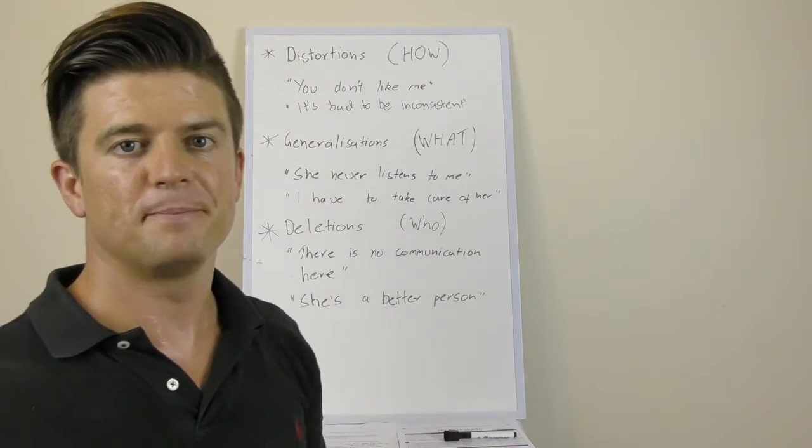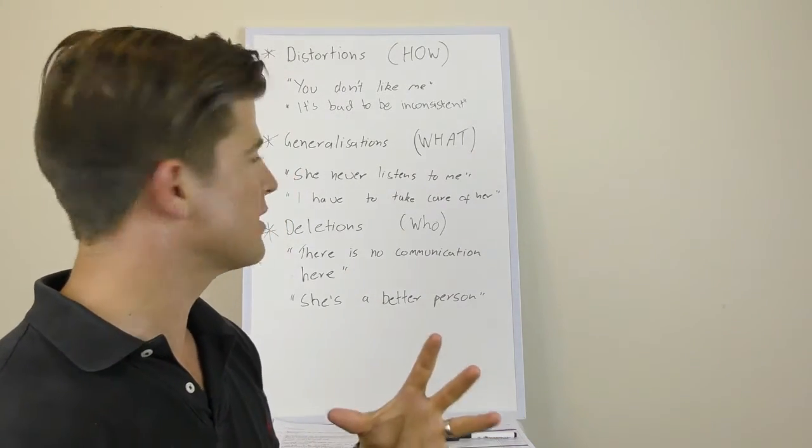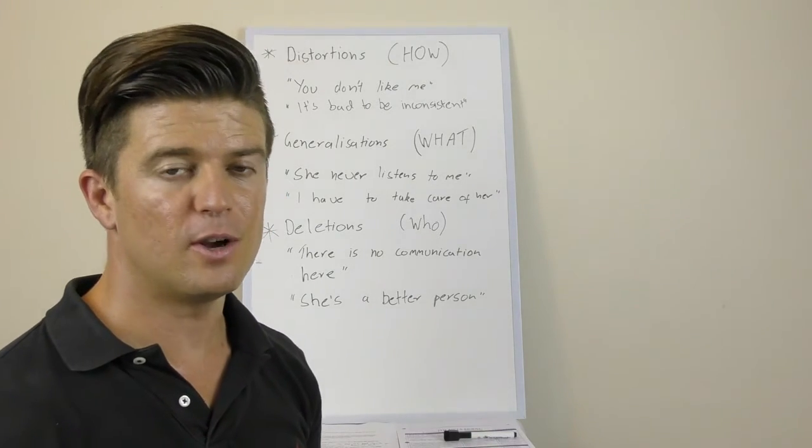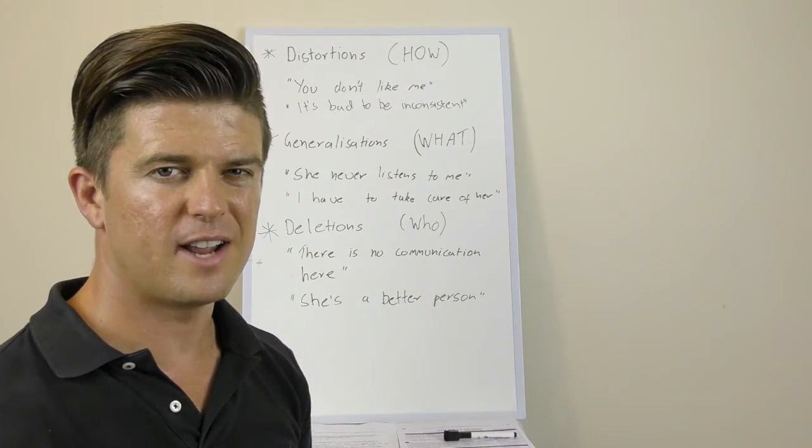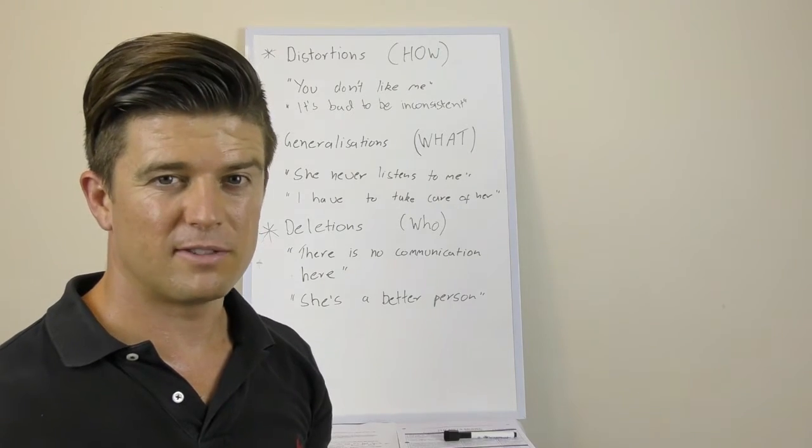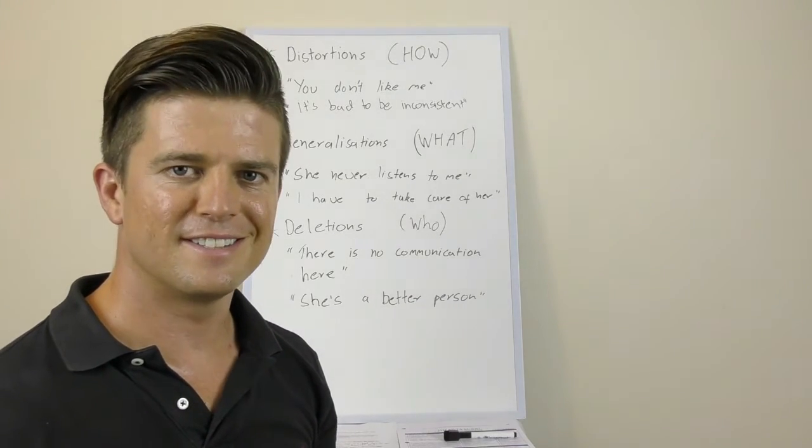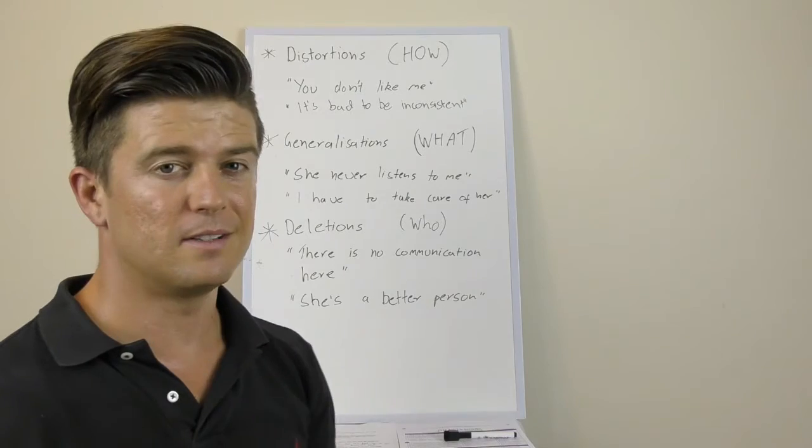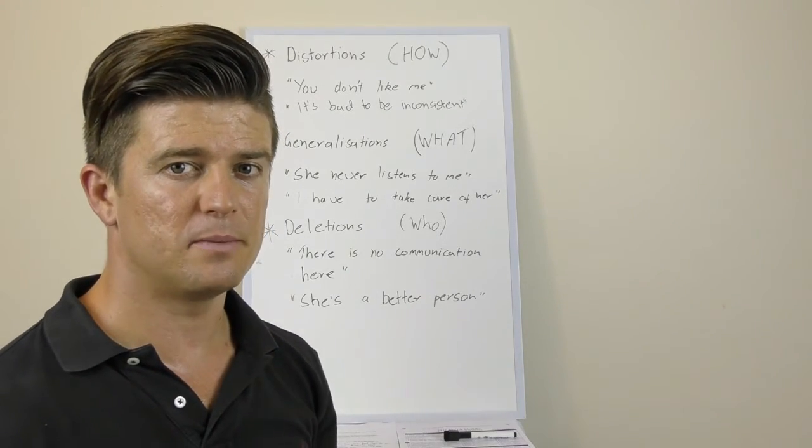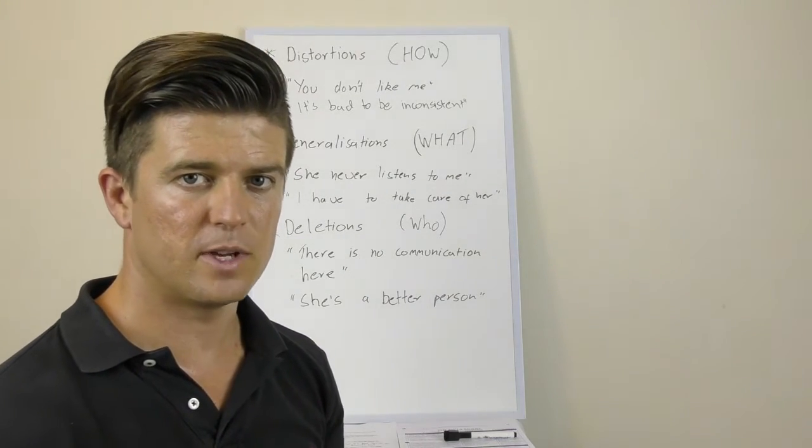So the first one is you don't like me. When you want to recover how that person came to that particular assumption, it might be like a simple question is how do you know I don't like you. So recovering the source of the information and how they came to that belief. Another example might be it's bad to be inconsistent. Now this is a common sort of phrase and what you realize is when you actually start questioning them they sort of start to sound a little bit more ridiculous. So questions we might ask for it's bad to be inconsistent is according to whom, how do you know it's bad, all these kind of questions. And we can look at well how did that person actually come to that assumption.